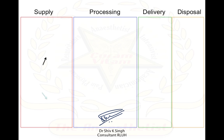If you look at the whole anesthesia machine, they can be divided into four parts: supply, processing, delivery, and disposal.